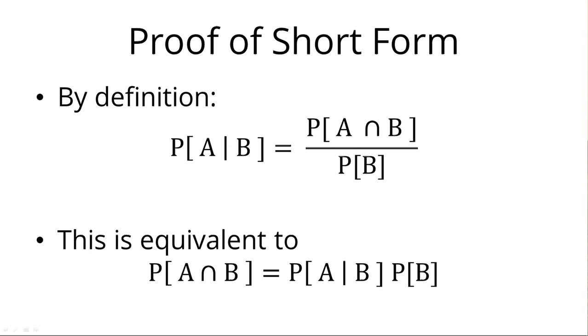So let's start with proving the short form. Remember the definition of conditional probability. The probability of A given B is equal to the probability of A intersect B over the probability of B. And again, we're always assuming that the probability of B is not zero. If the probability of B were zero, then it really wouldn't make sense to talk about any of this conditional probability. Now notice that if we multiply both sides of that top equation by the probability of B, we get the bottom equation. So the probability of the intersection is equal to the probability of A given B times the probability of B.